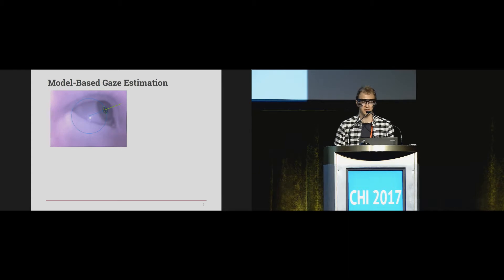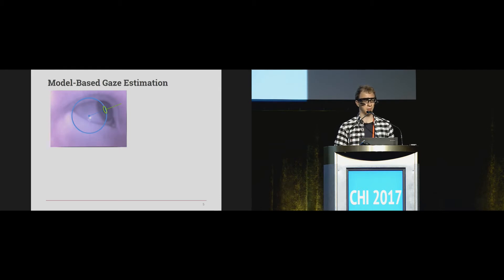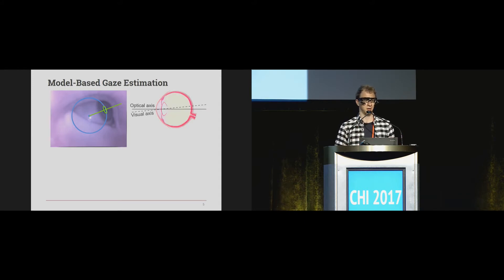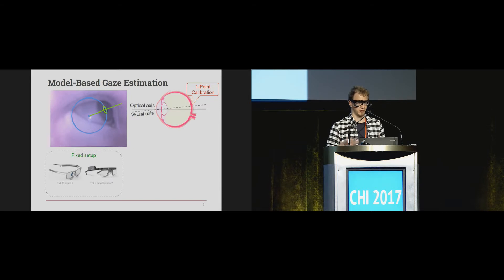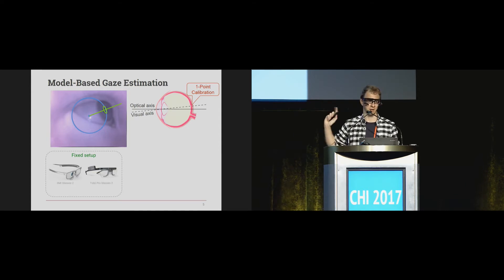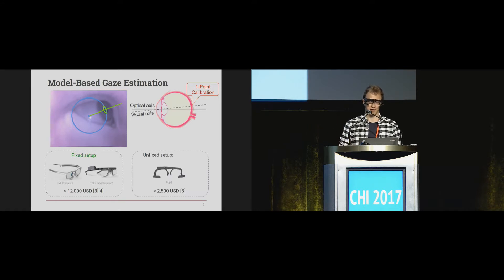With model-based gaze estimation, you construct the geometric model of the eye. You get the ocular globe and the center of the ocular globe. In order to estimate the gaze vector, you detect the pupil and trace a ray from the center of the eye to the center of the pupil. The problem is that's the optical axis, which for humans does not match our visual axis. To compensate, you need at least a one-point calibration. Also, if you have a fixed setup with cameras that don't move, you can translate this gaze vector into a position in the field image. However, devices like SMI and Tobii glasses are very expensive — on the order of $10,000. There are less expensive alternatives like Pupil eye-trackers, the one I'm wearing right now, but you can move the cameras around, so you still require a calibration. Moreover, these devices do not account for glasses, so the stronger your glasses, the worse your gaze estimation.